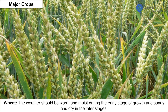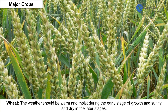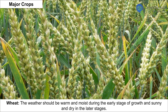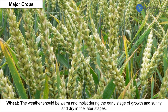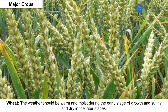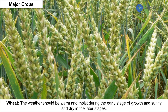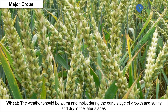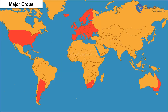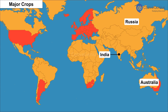Wheat requires warm and moist weather during the early stage of growth, and sunny and dry conditions in the later stages. It is largely grown in India, Russia, Australia, Canada and USA.